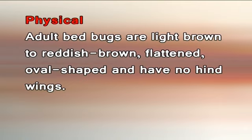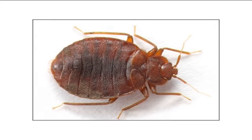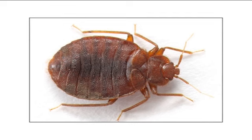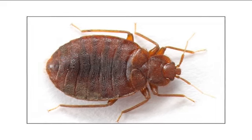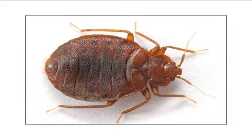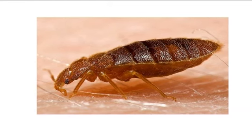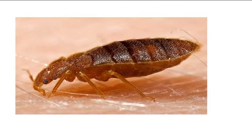Adult bed bugs are light brown to reddish brown, flattened, oval-shaped and have no hind wings. The front wings are vestigial and reduced to pad-like structures. Bed bugs have segmented abdomens with microscopic hairs that give them a banded appearance. Adults grow about 4–5 mm long and 1.5–3 mm wide.